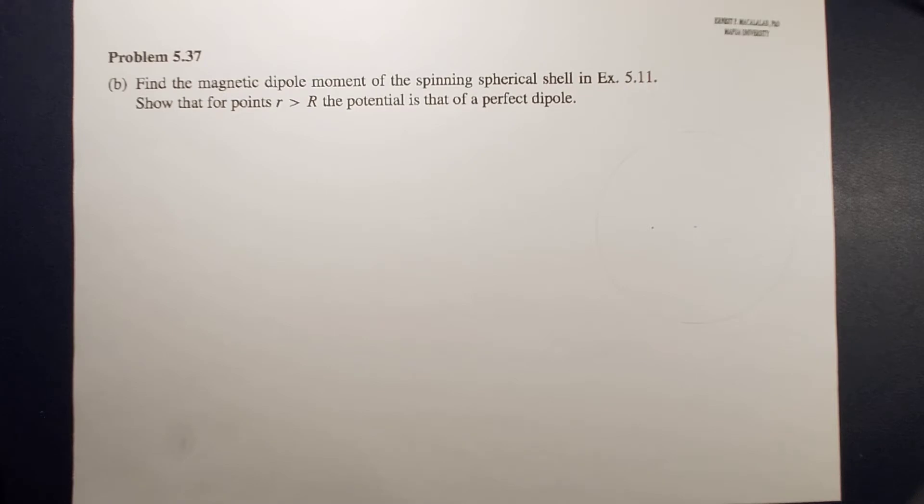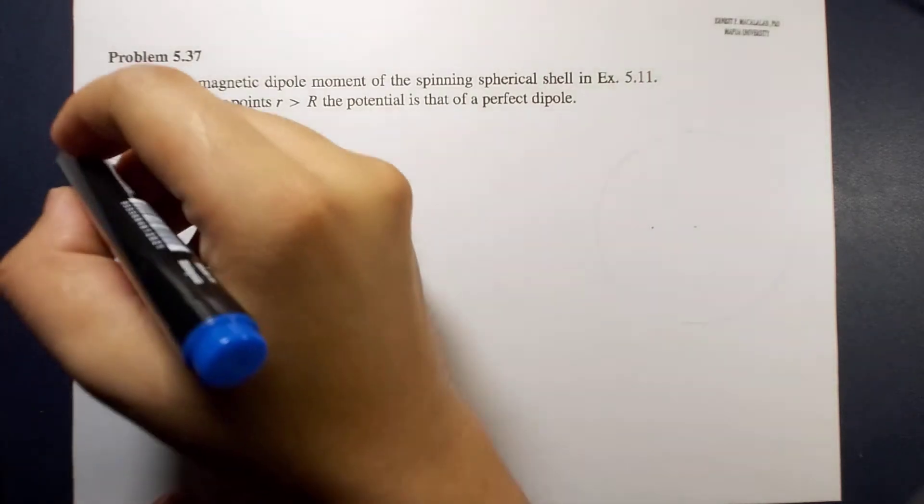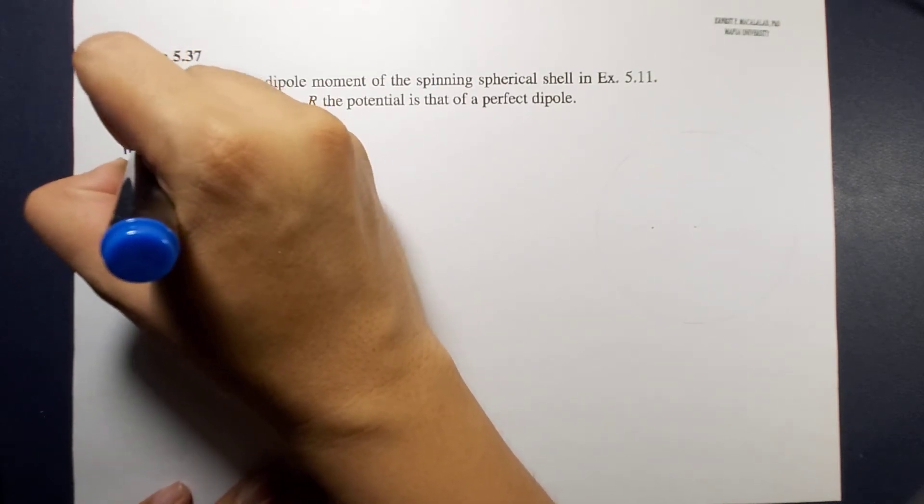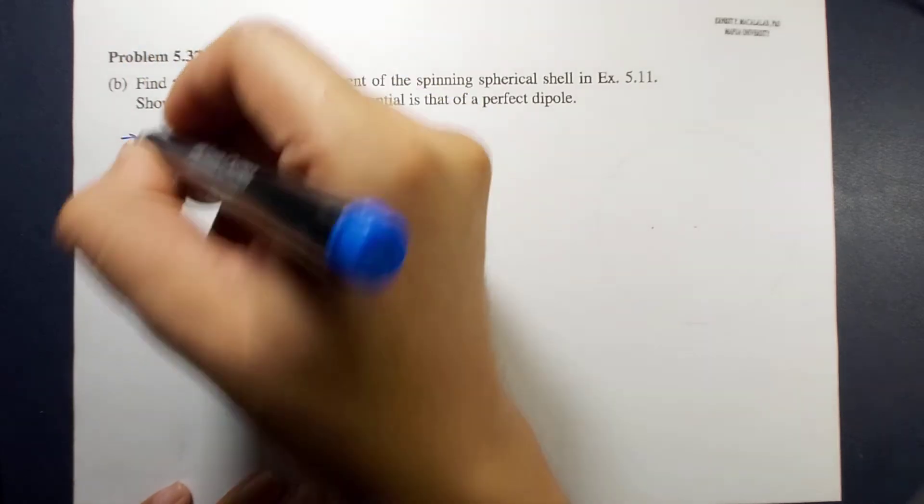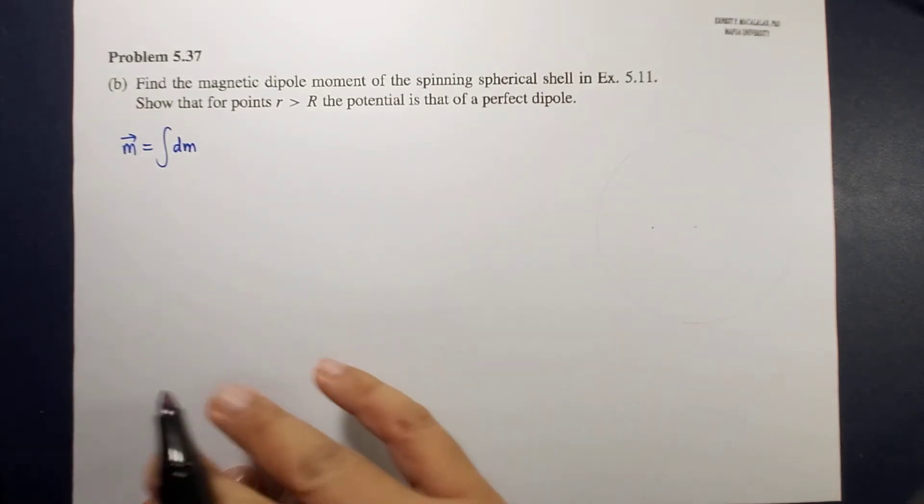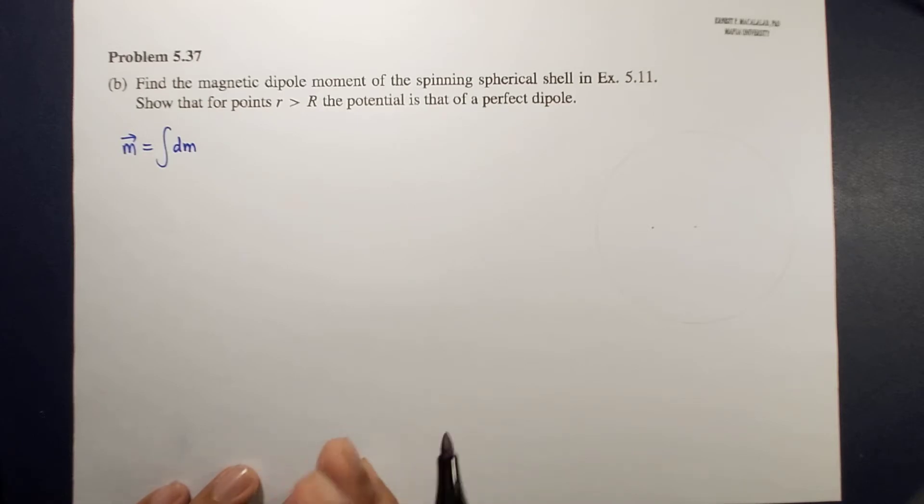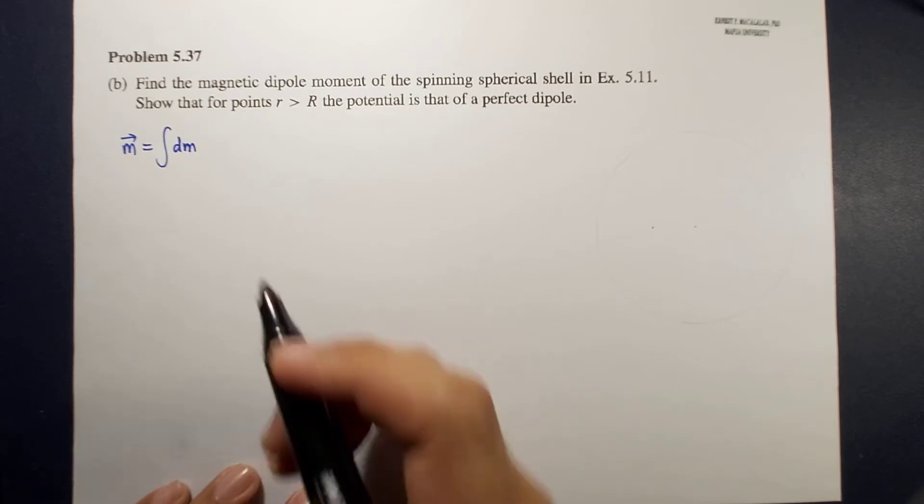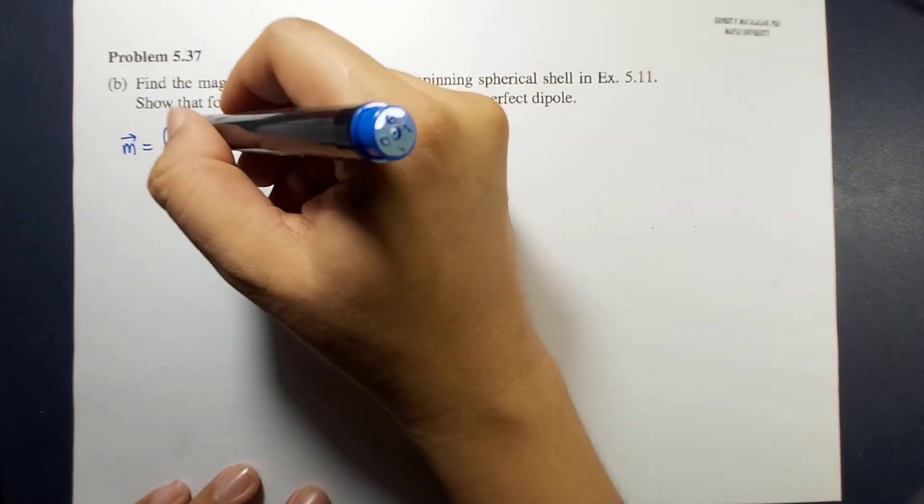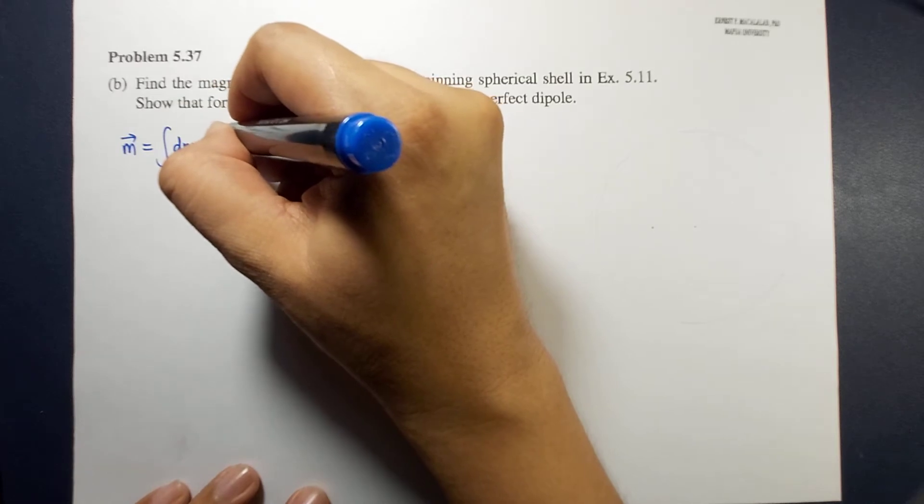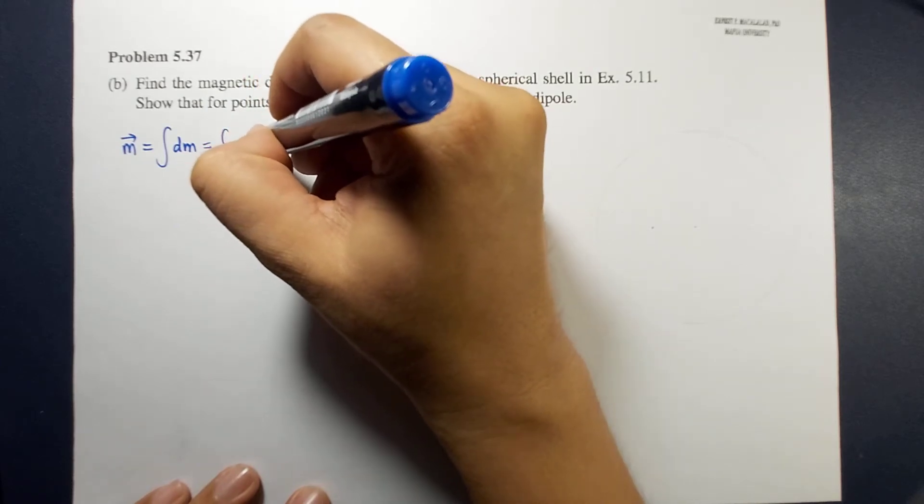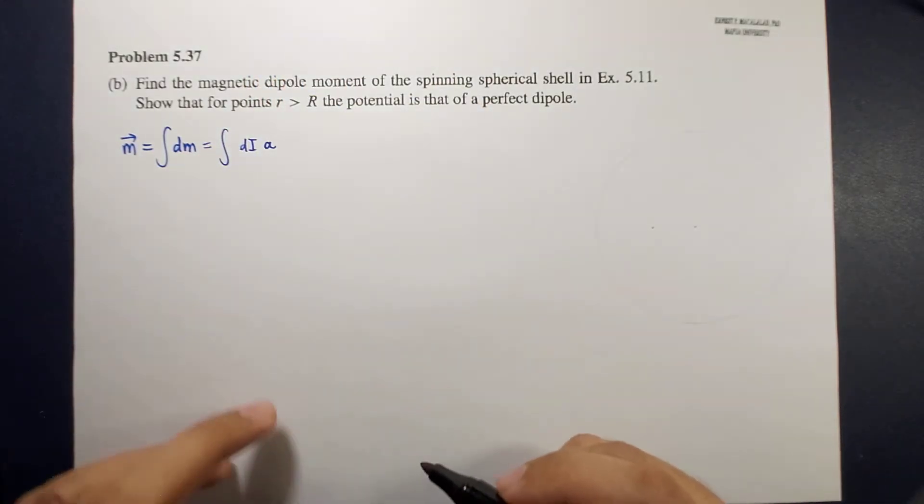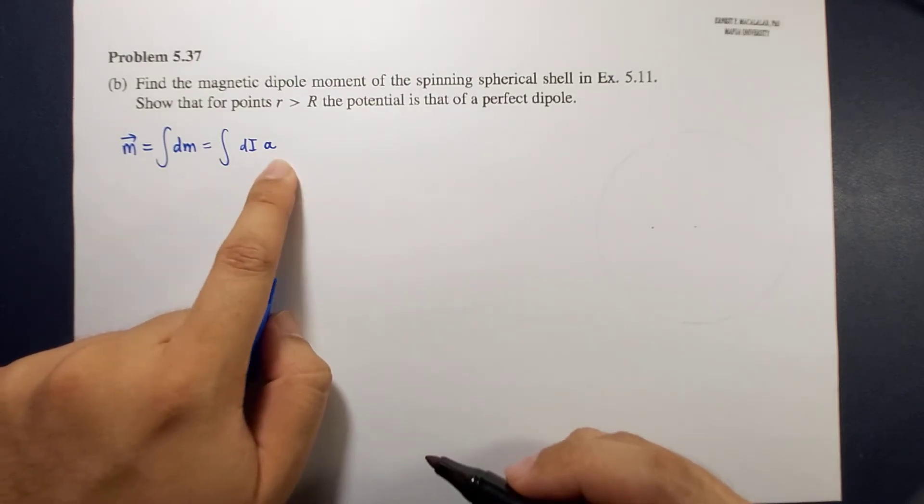First things first, we need to recall that the magnetic dipole moment is equal to the integral of every dipole moment that a moving charge configuration produces. This is also equal to the integral of dI times A. So you have to find first what dI is and what the area element is.